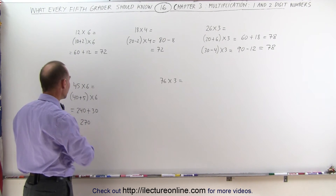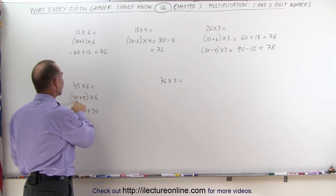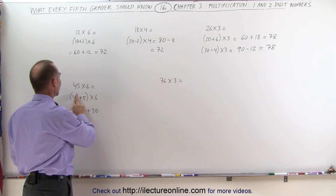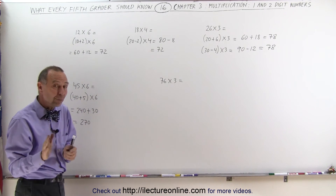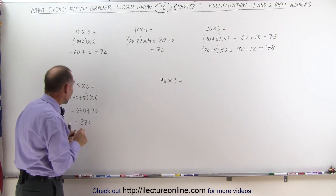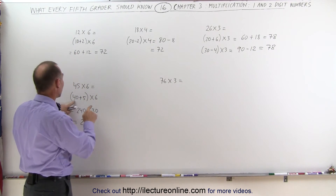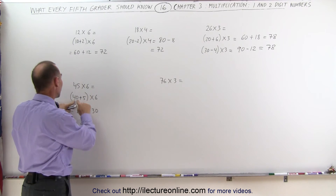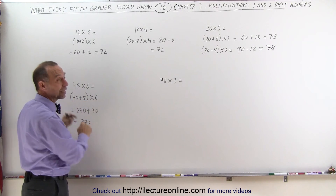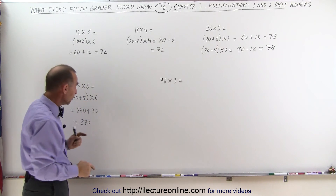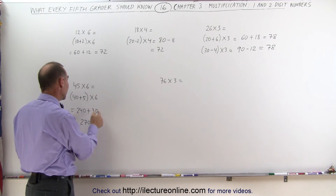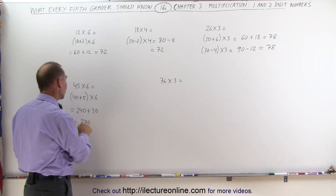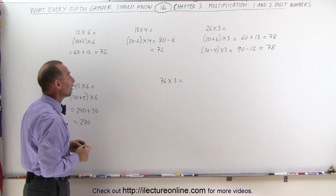So again: 40 times 6 — think of it as 4 times 6. Imagine for a moment that the 0 isn't there: 4 times 6 is 24, but the 0 is there, so add a 0. That gives you 240. 5 times 6 is 30. 240 plus 30 is 270.